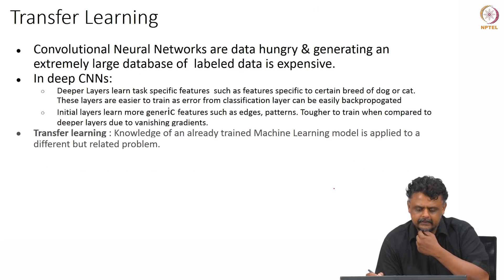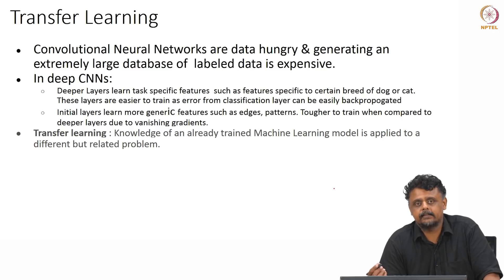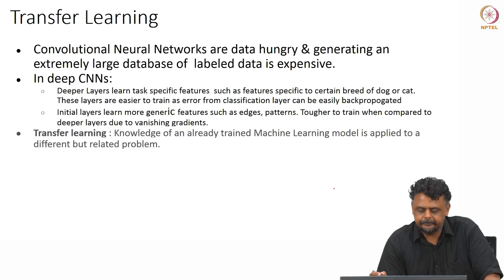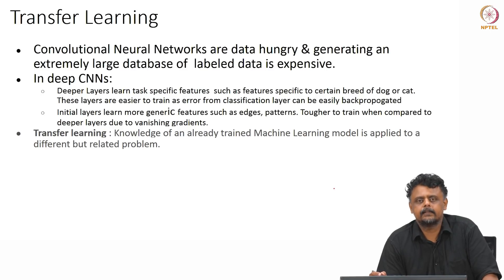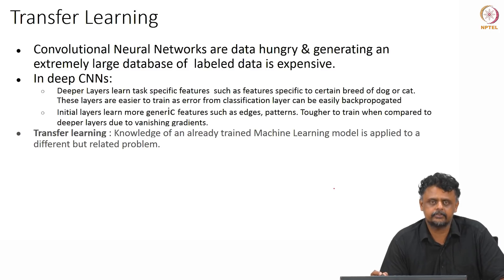The reason it works is that if you have a fairly large database which is labelled — just like the ImageNet database — and a network trained on it, considerable effort has gone into making that. Given the size of the database and the depth of the network trained on it, it is safe to assume that the network has learnt all kinds of low-level features which are transferable to other tasks.